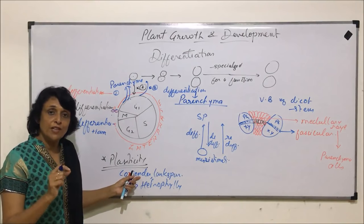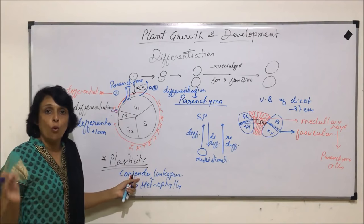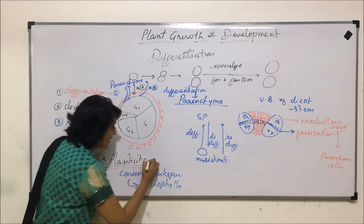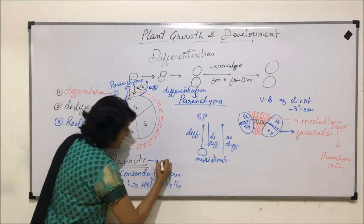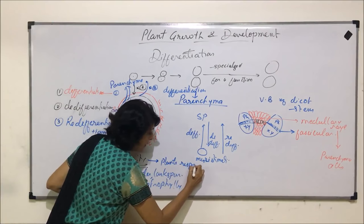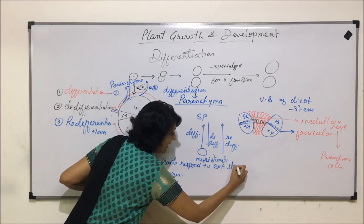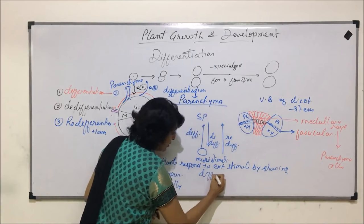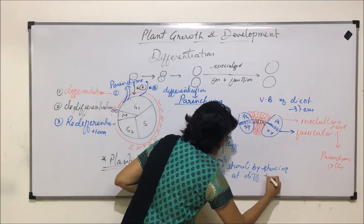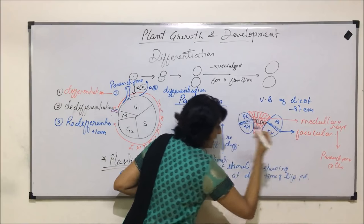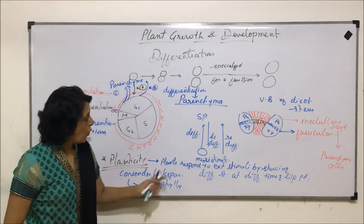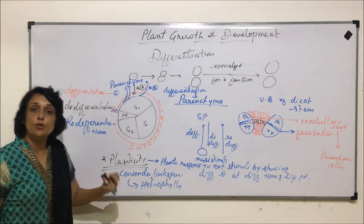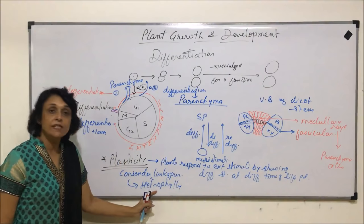When the same coriander plant turns old, the leaves undergo further incisions and their shapes are different. This is called heterophily. So what exactly we mean by plasticity is that these plants respond to external stimuli by showing different structures at different time periods of their life. A young plant would show a particular shape of the leaf, and an old plant would have a different leaf shape — they are responding to external conditions.